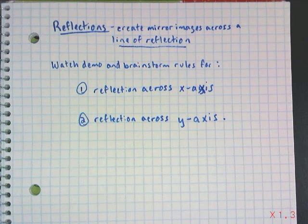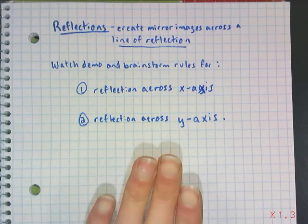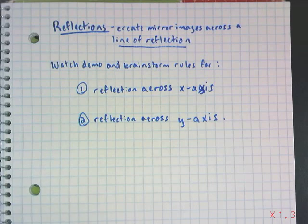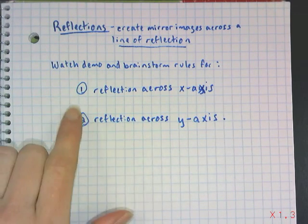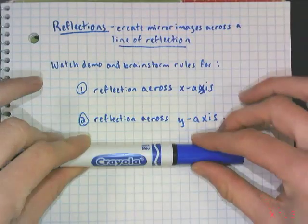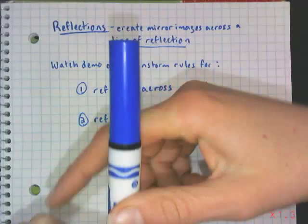Now, reflections also preserve congruency between the image and the original — you might know this as a mirror image. The thing you're reflecting over is called the line of reflection. I'll show you a demo so you can try to come up with the rule for reflecting across the X-axis and the Y-axis.